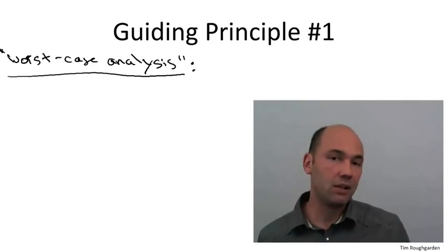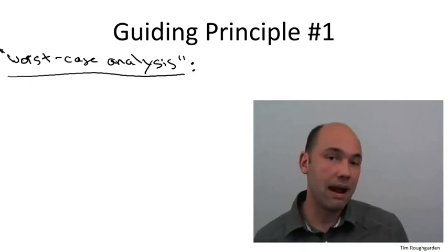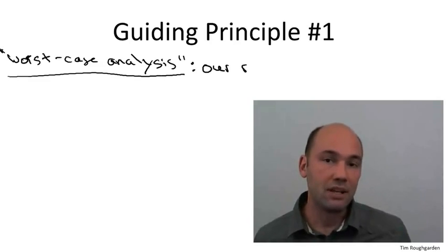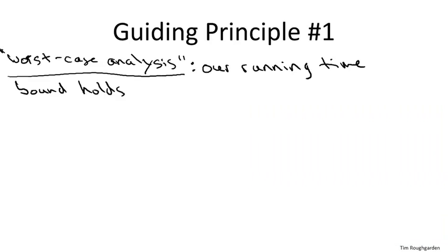Put differently, if hypothetically we had some adversary whose sole purpose in life was to concoct some level of input designed to make our algorithm run as slow as possible, the worst this adversary could do is upper bounded by this same number, 6n log n plus 6n. Now, this sort of worst case guarantee popped out so naturally from our analysis of merge sort, you might well be wondering what else could you do.